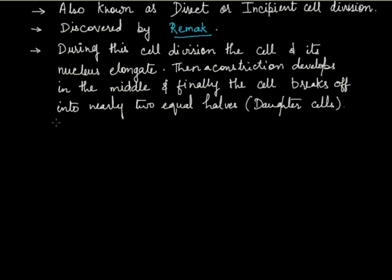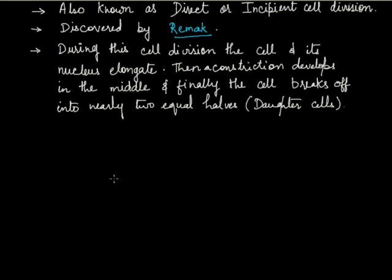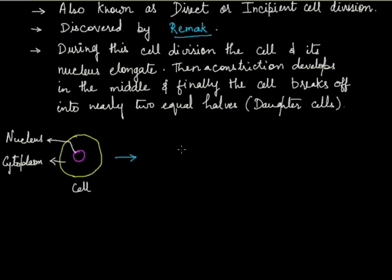If we represent it diagrammatically, say for example, this is a eukaryotic cell which contains a well-defined nucleus. This is the cytoplasm, and this blue circle is representing the nucleus. Now, in the first step, this cell along with its nucleus will first elongate.